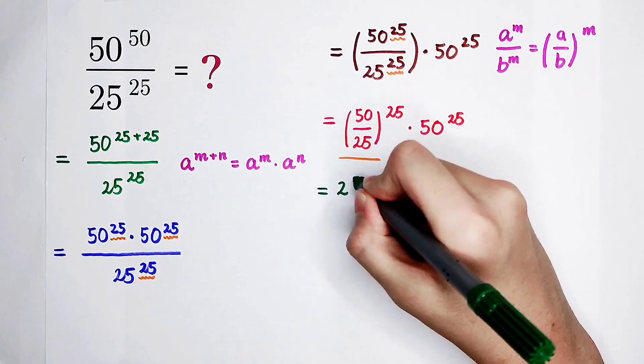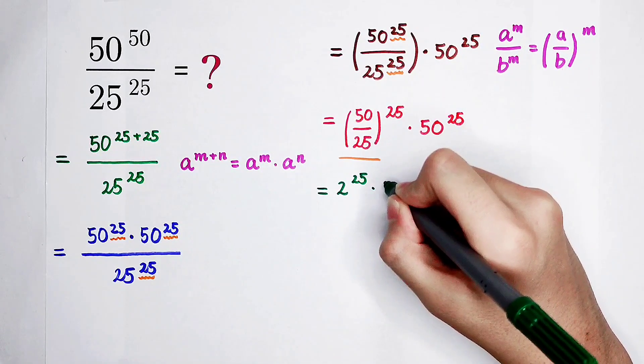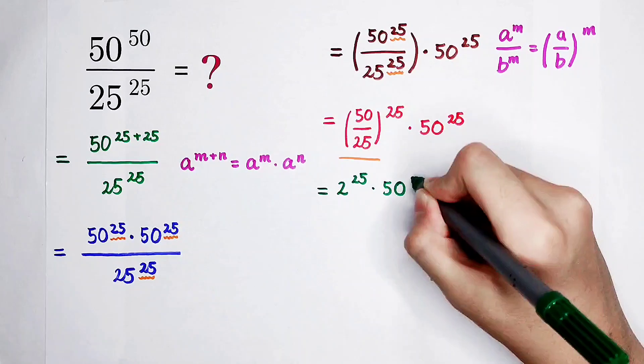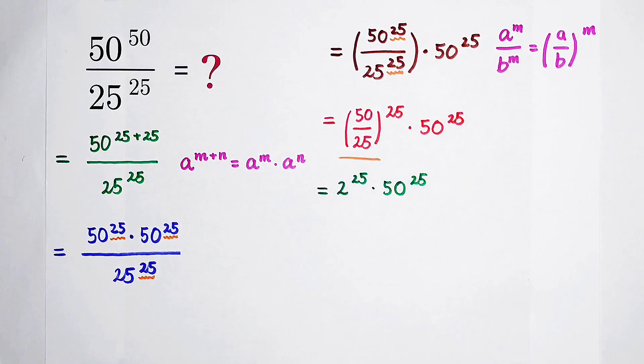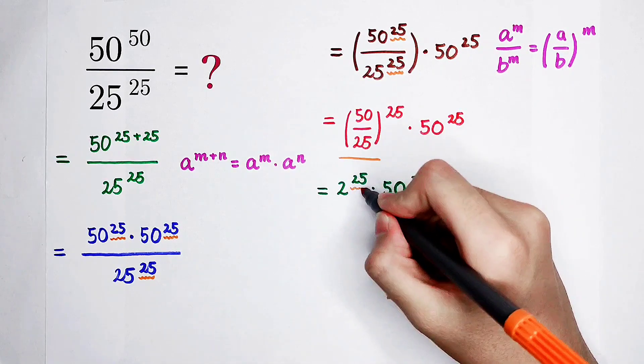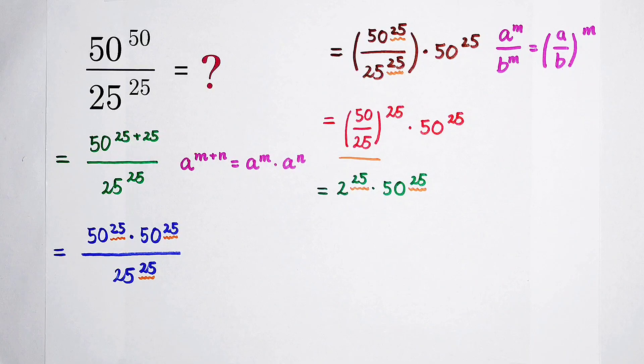So it is 2 to the power of 25, and then times 50 to the power of 25. They have the different bases, but they have the same exponent. So we have to use another formula. Remember.